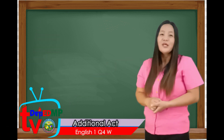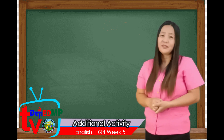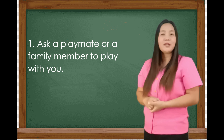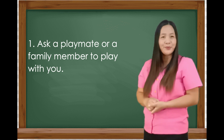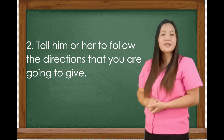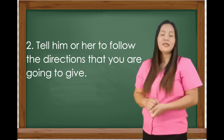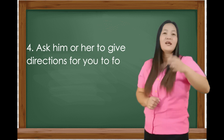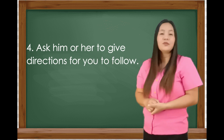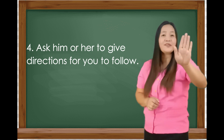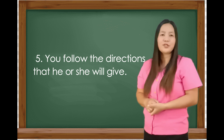For the additional activities, you are going to play a game. Number 1: Ask a playmate or a family member to play with you. Number 2: Tell him or her to follow the directions you give. Number 3: Praise him or her if the directions were done correctly. Number 4: Ask him or her to give directions for you to follow. Number 5: You follow the directions that he or she will give.